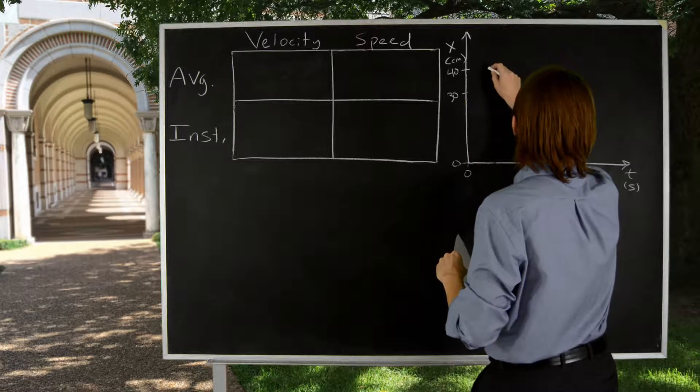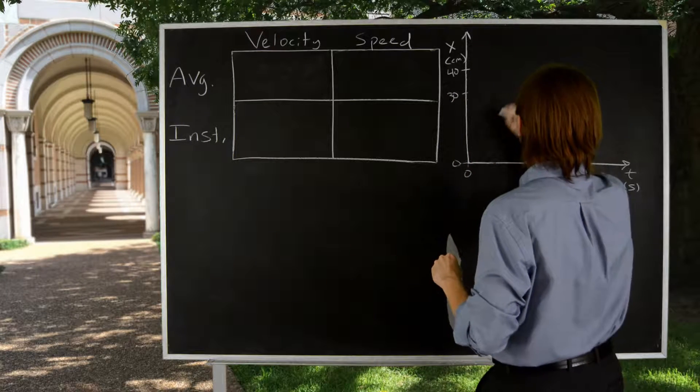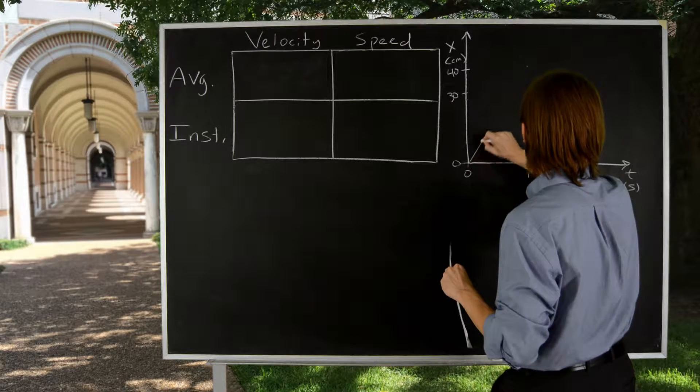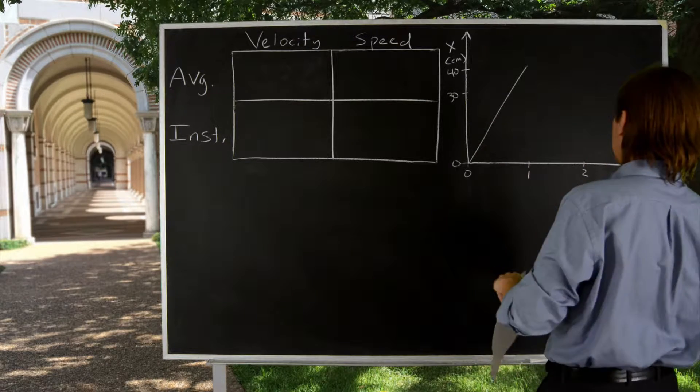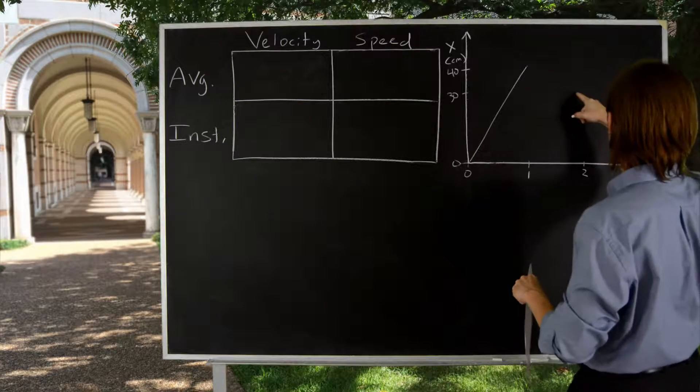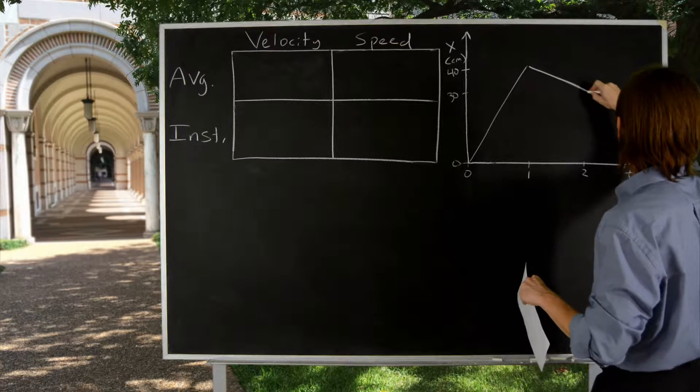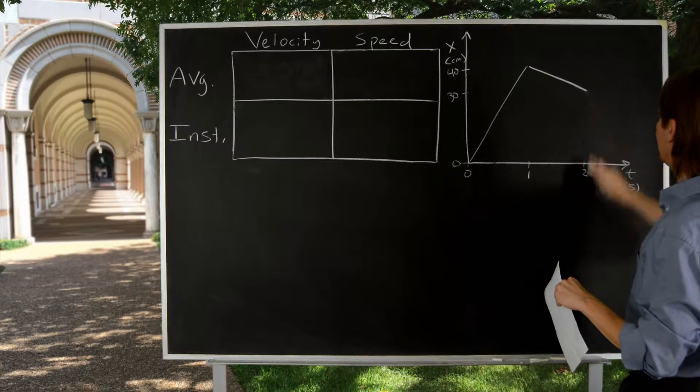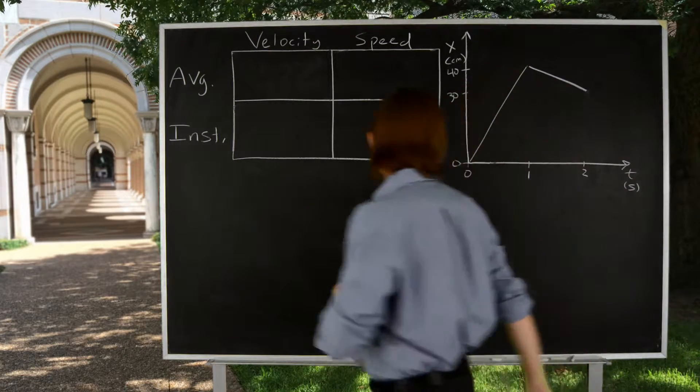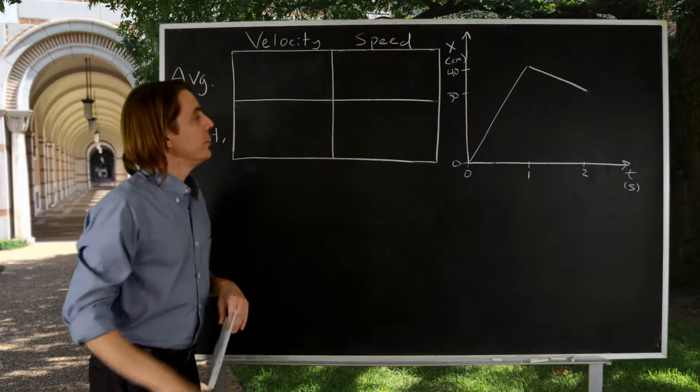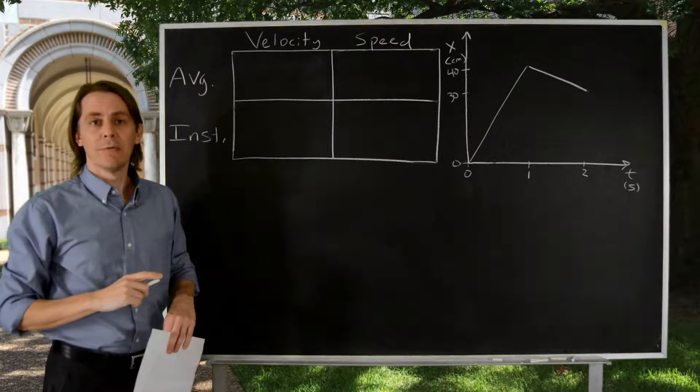Let's make a kinematics plot of that. So it would start out going from 0 to 40 in one second, and then take its time getting down to 30 in the second second. So that's our motion, and now let's start defining these quantities.